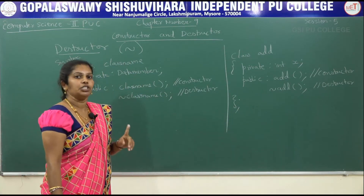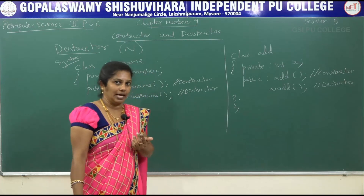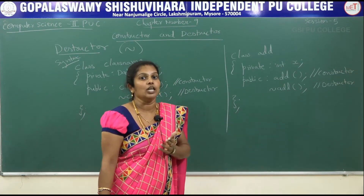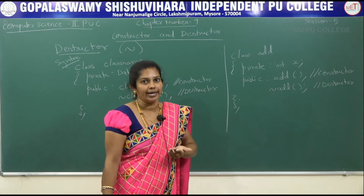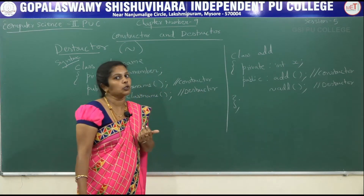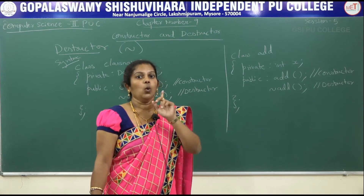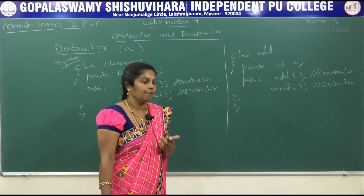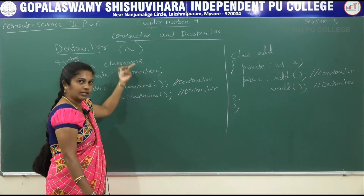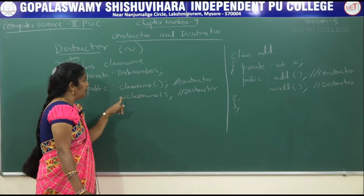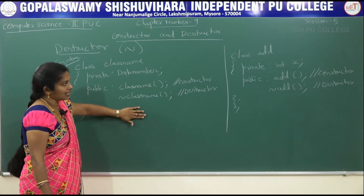To summarize Destructor: it is a special member function that executes automatically when the object of a class is destroyed. It de-allocates the memory which was allocated by the Constructor. The Destructor cannot be overloaded, so only one Destructor is used per program. The class name and Destructor function name are the same, preceded by the tilde operator.